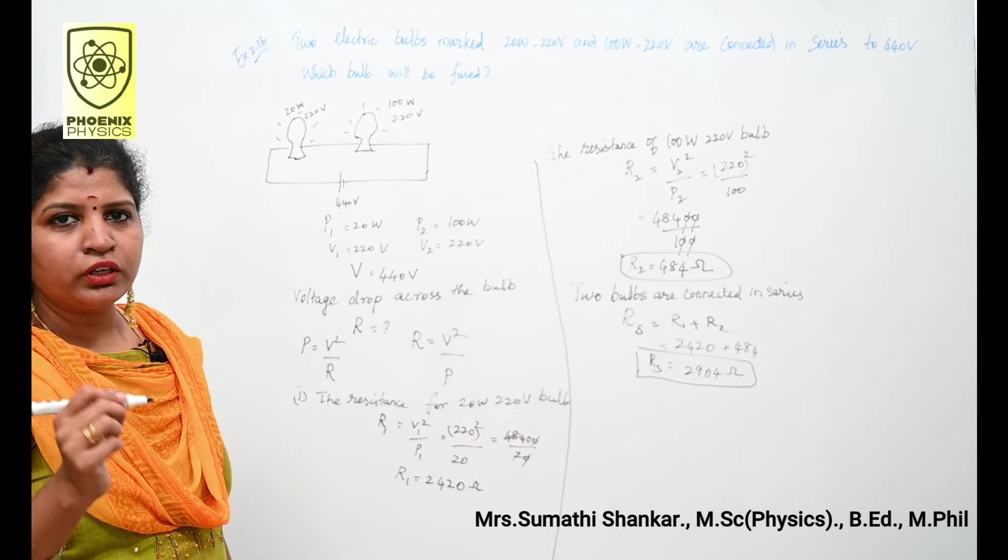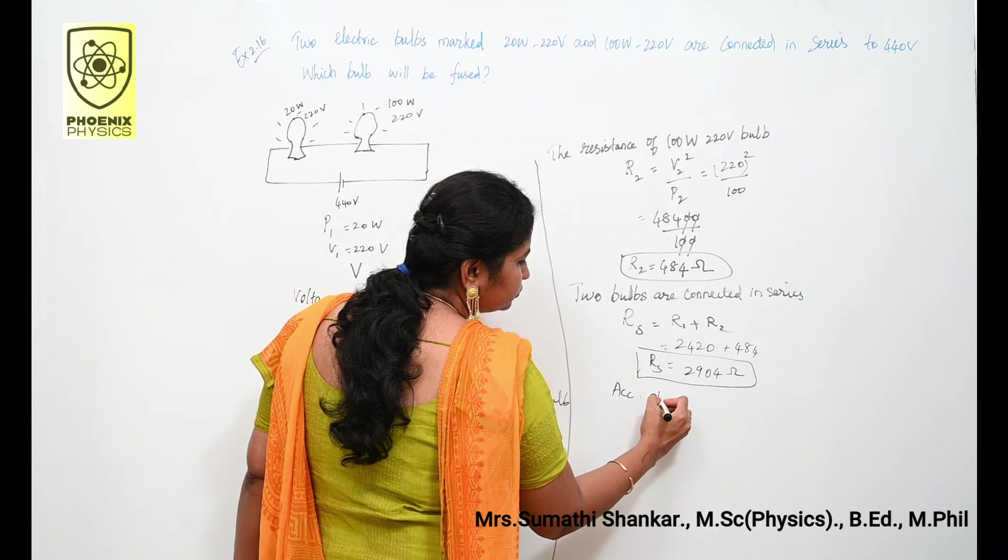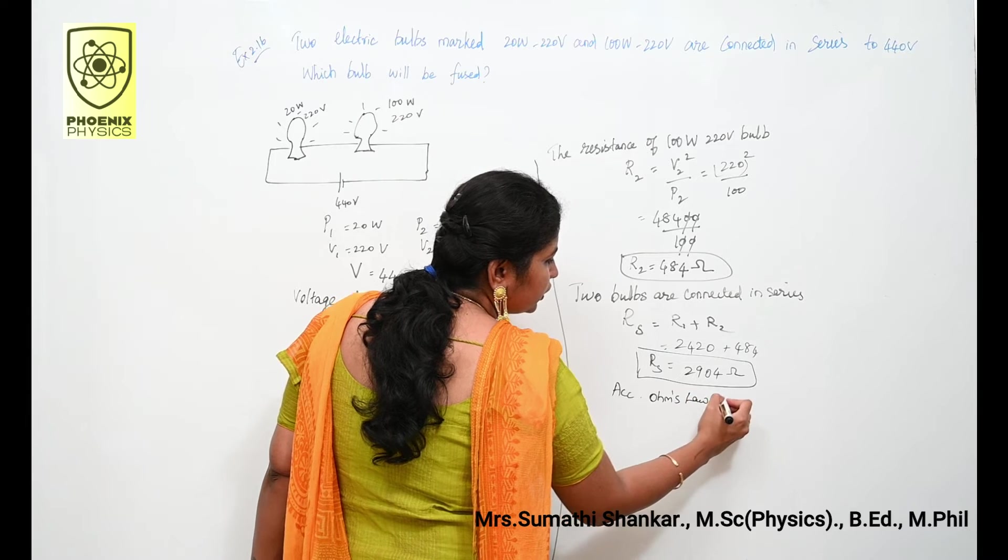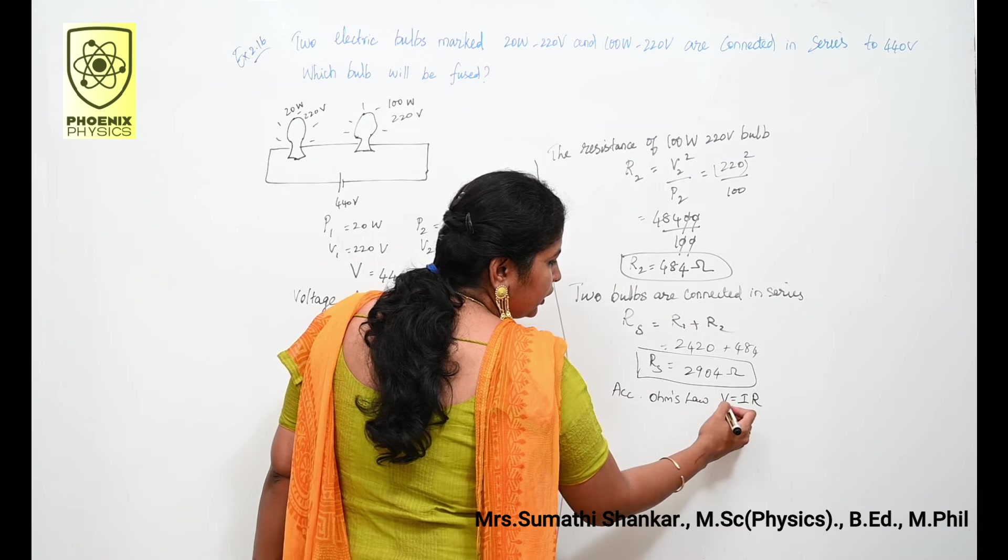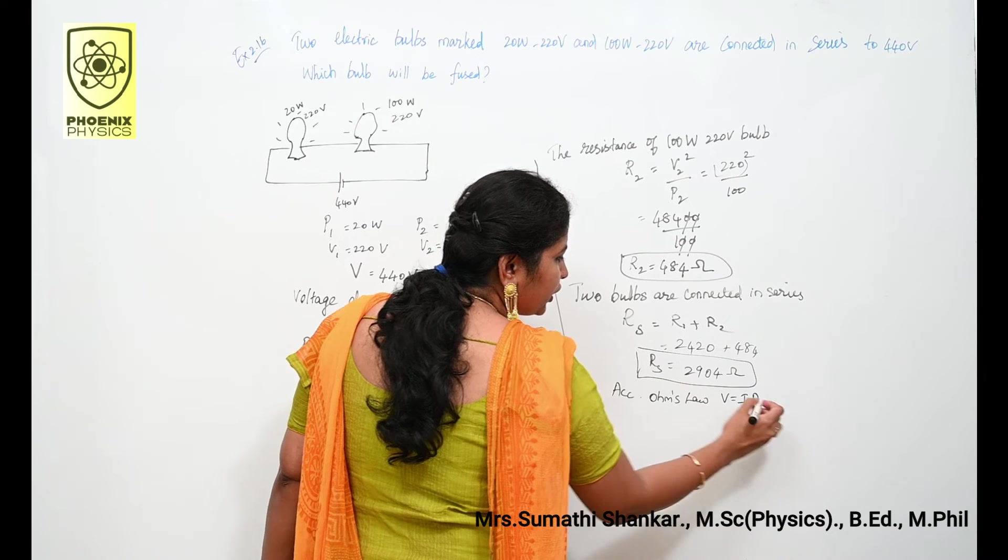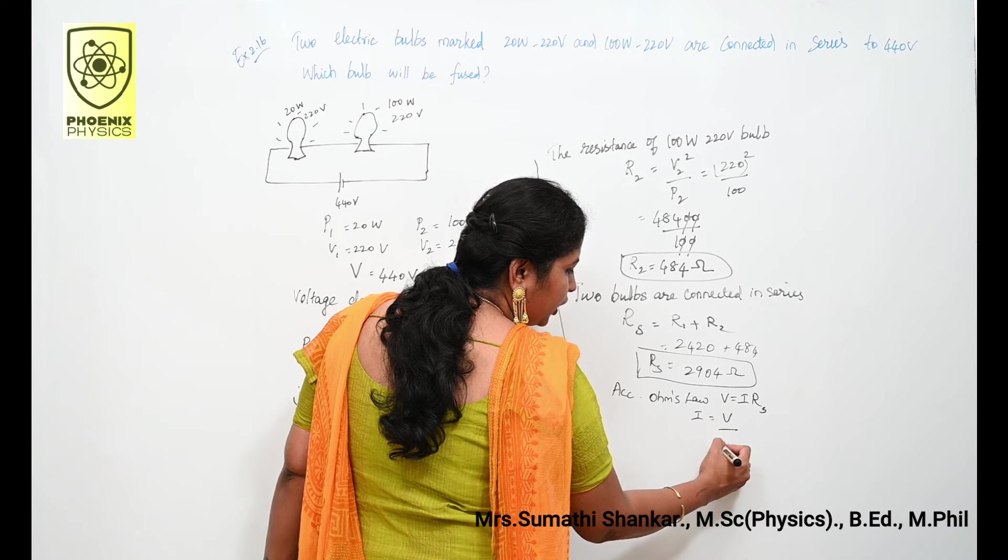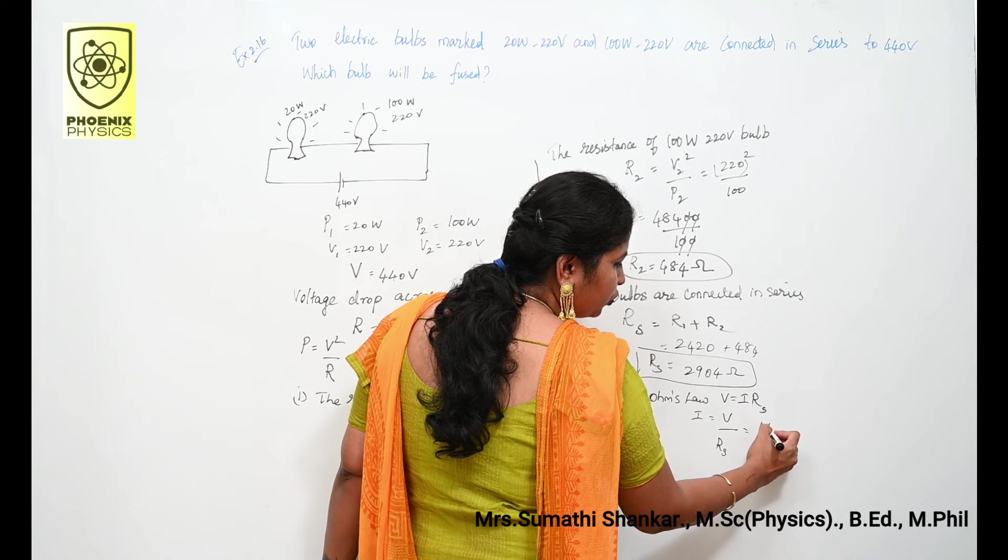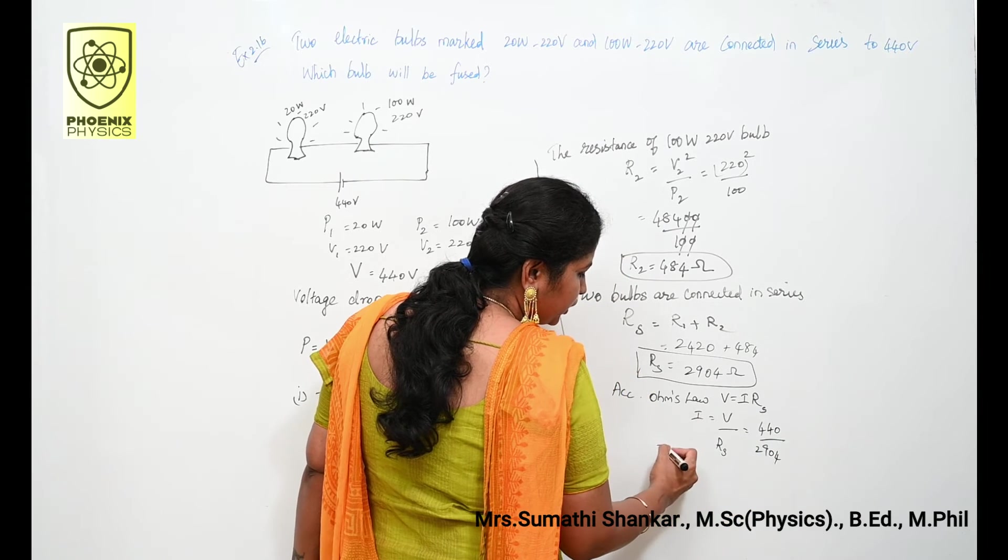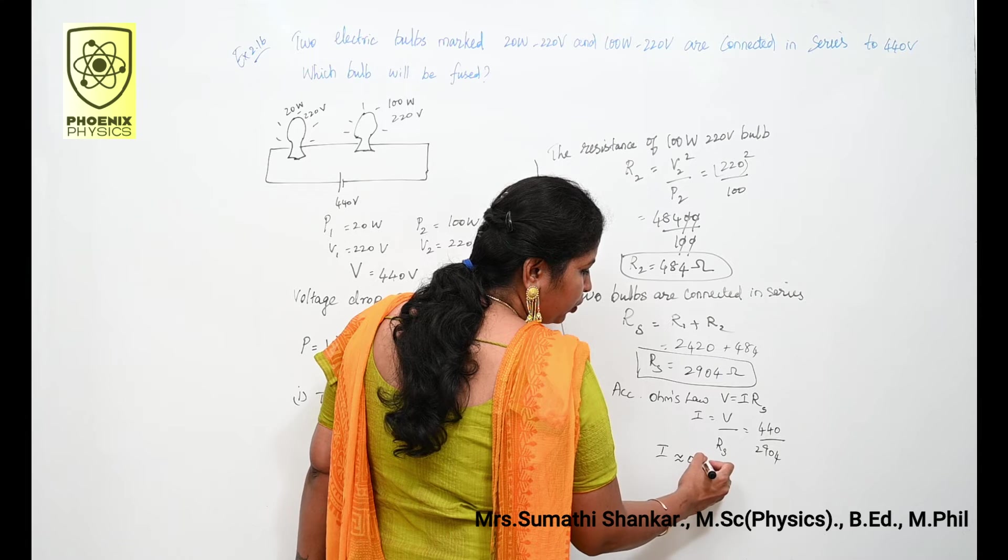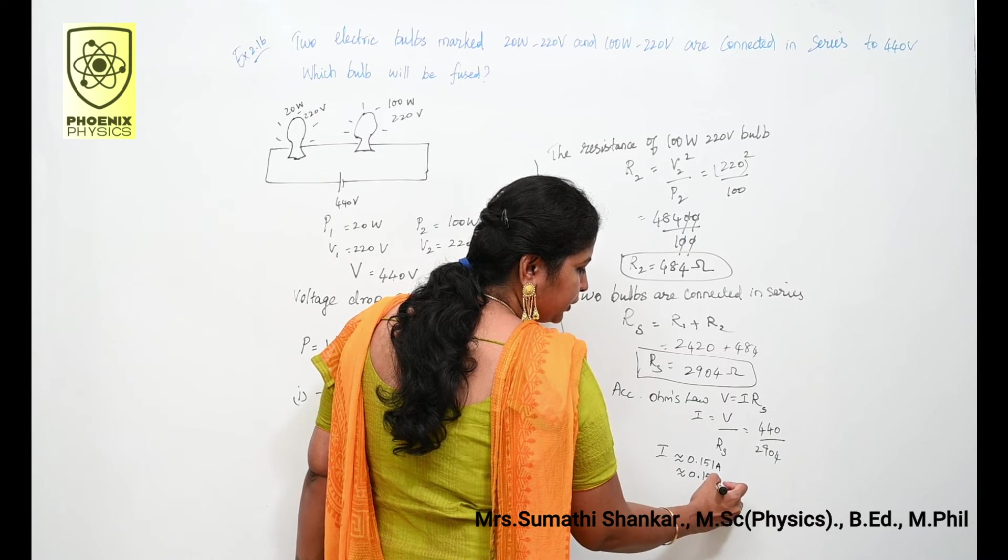Next I am going to calculate current. According to Ohm's law, V is equal to I into R. Here instead of R you write it as Rs. Then how do you calculate I? I is equal to V by Rs. Here V is 440 volt, 440 divided by 2904. Divide these two, you can get the answer is 0.15 ampere.